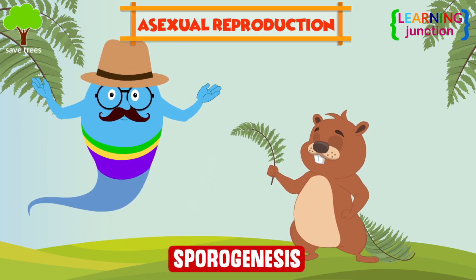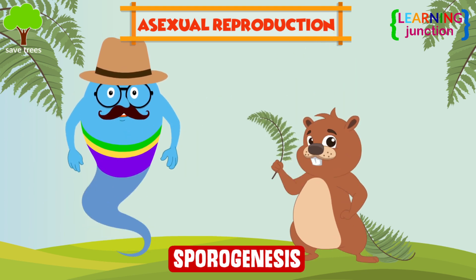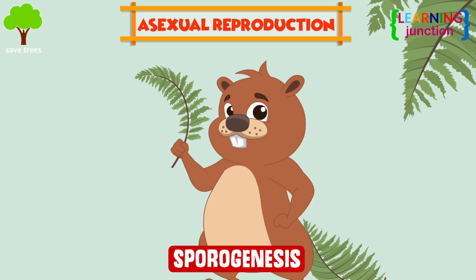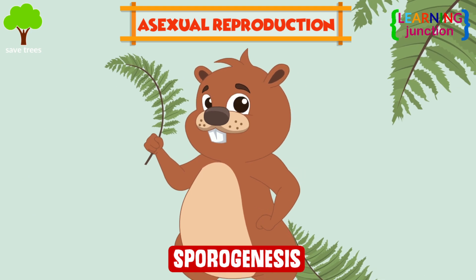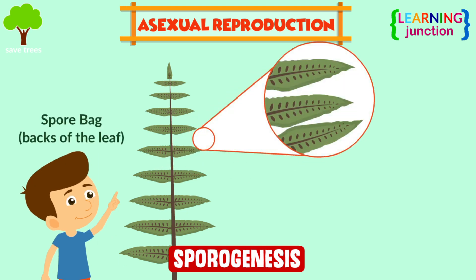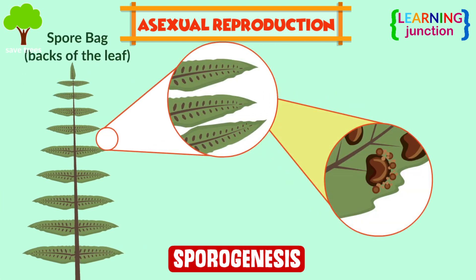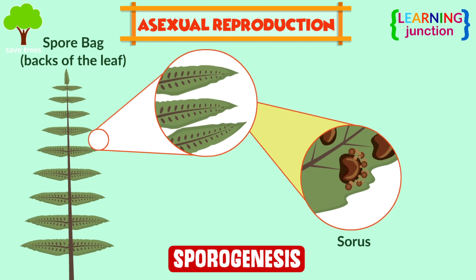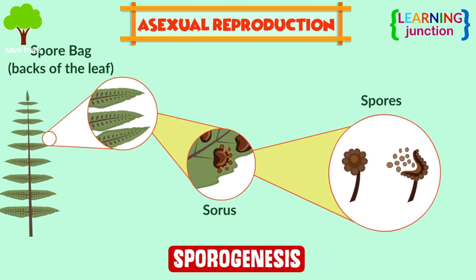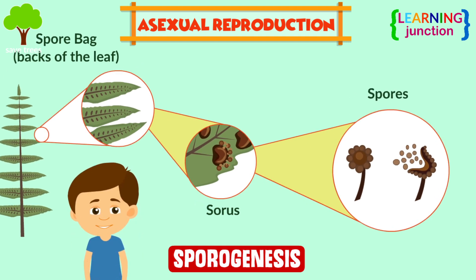Sporogenesis: in this type of reproduction, a new entity grows from the spores of certain leaves. This mountain beaver is happily playing with the fern leaves. The spore bags are located on the backs of the leaf. These are sorus, the groups of sporangia which contain spores, and these spores are further used in reproduction of plant-like ferns.